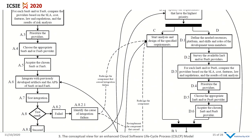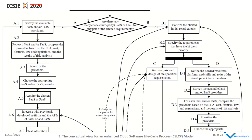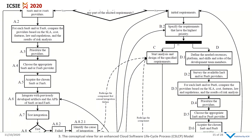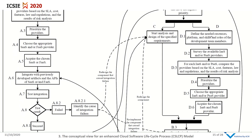In Path P, prioritize the listed requirements and specify those with the highest priority. Then proceed in parallel in two paths, Path C and Path D. In Path C, start the analysis and design of the specified requirements. In Path D, define the needed resources, platforms, skills, and roles of the development team members, and survey the available Infrastructure as a Service or Platform as a Service providers.